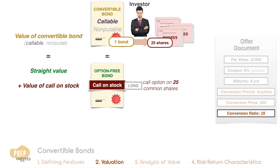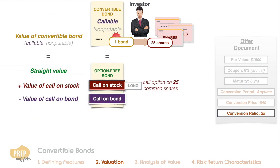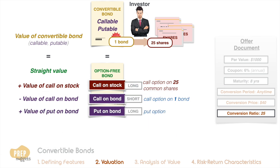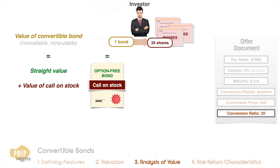If the convertible bond is callable, we subtract the value of the call option on the bond, because the issuer exercises the call option, so the investor is short the option. And if the convertible bond is also putable, we add on the value of the put option, because the investor is long the put option. For simplicity, we shall just consider the case of non-callable and non-putable convertible bonds for the rest of this lesson.